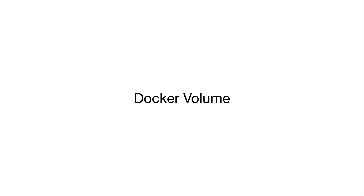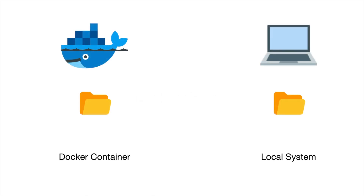What is Docker volume exactly? We have Docker with its own file system, and we have our local system where Docker is running, which has its own file system. When a container is running inside a host system, the host system's file is not automatically shared with the Docker container. The Docker container has its own file system, based on how the Dockerfile is written, and it is purely isolated from the host file system.